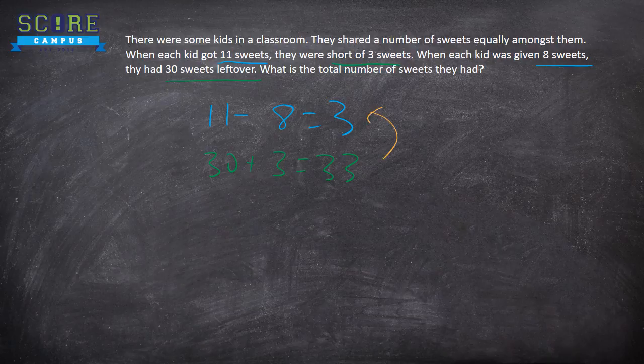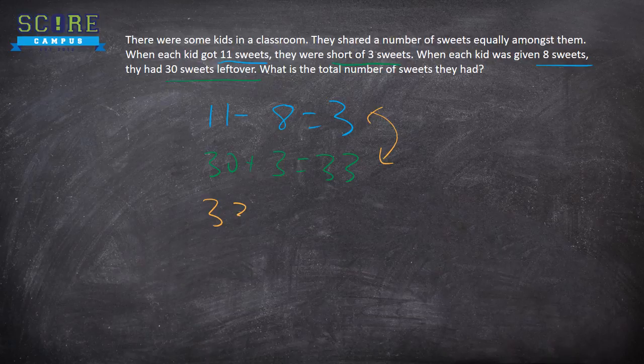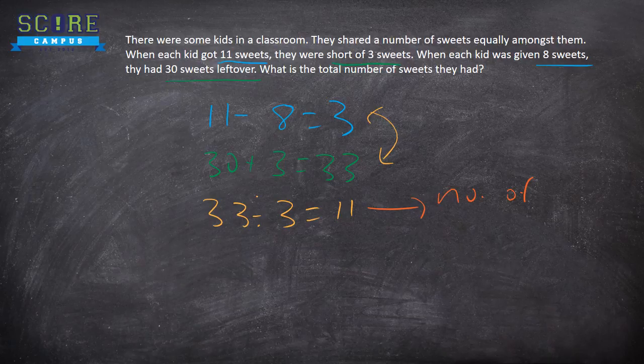Now, play with these two. 33 divided by 3 equals to 11. What is this? The number of children. Number of kids.